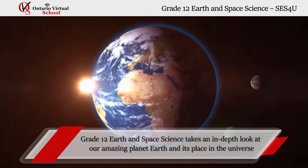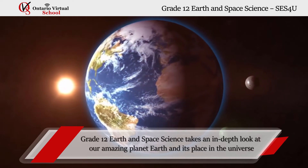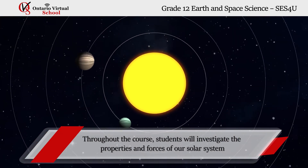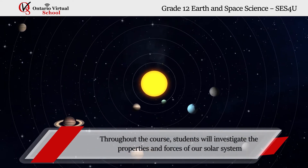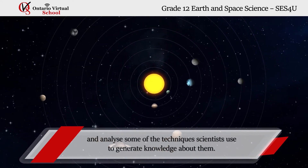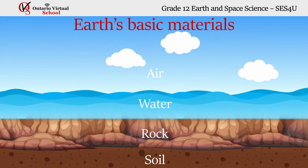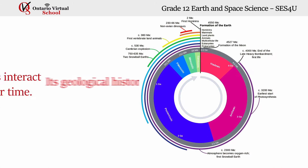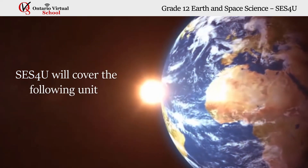Grade 12 Earth and Space Science takes an in-depth look at our amazing planet Earth and its place in the universe. Throughout the course, students will investigate the properties and forces of our solar system and analyze some of the techniques scientists use to generate knowledge about them. In doing so, students will examine Earth's basic materials, its geological history, and how its systems interact and change over time. SES4U will cover the following units.